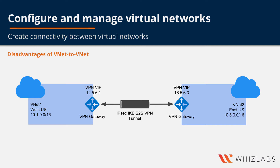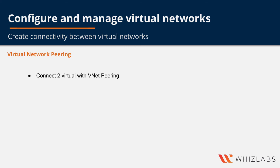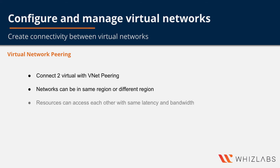Creating a gateway means creating two virtual machines underneath, which means more cost. A better alternative Azure provides is virtual network peering, which does not require you to create any VNet gateway. You can connect two different virtual networks to each other with virtual network peering, and these virtual networks can be in the same region or different regions, known as global VNet peering. Once paired, resources in both virtual networks communicate with the same latency and bandwidth as if they were in the same virtual network.